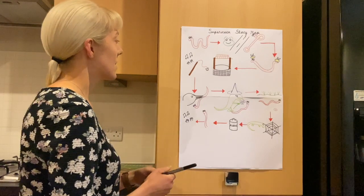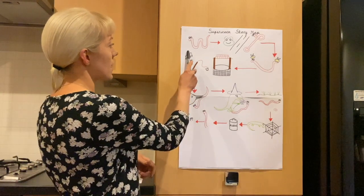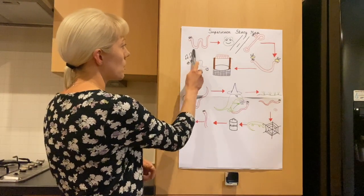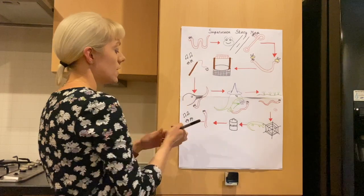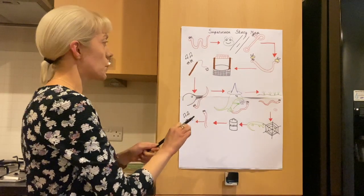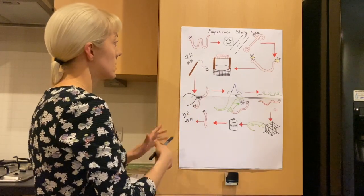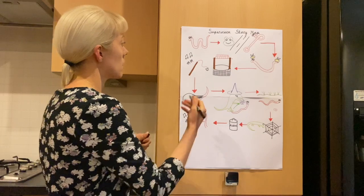Right, so at the beginning of the story it started off with Superworm, didn't it? So we can label it with 'Superworm is strong.'